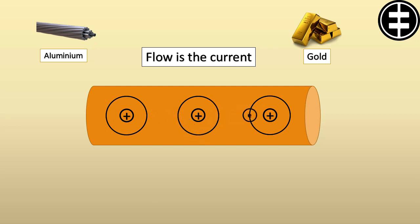This flow can happen because with a little energy, electrons can move between atoms. All these materials are called conducting materials.